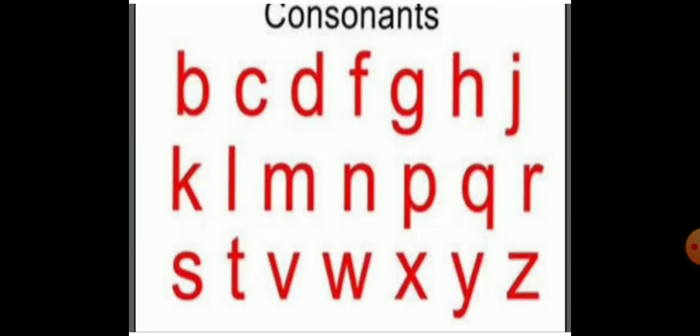When you pronounce consonants, we use our lips or our tongue to pronounce these letters. Like B, C, D, F, G, H, J, K, L, M, N, P, Q, R, S, T, V, W, X, Y, Z.